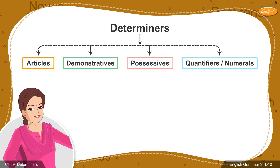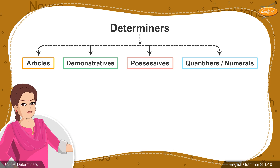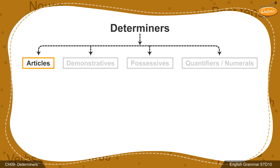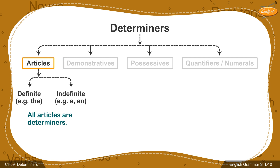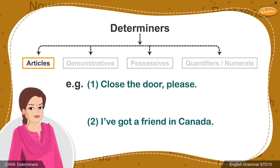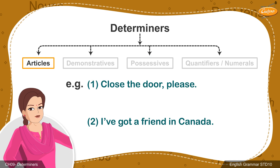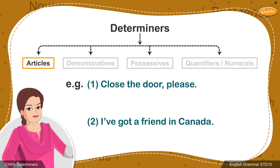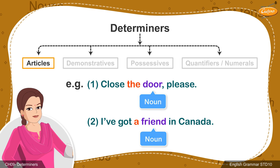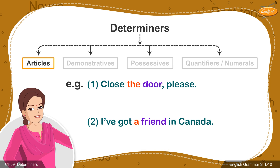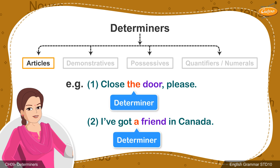Let's now learn in detail about each type of determiner. Students, all articles whether they are definite or indefinite are determiners. In the given examples, 'close the door please' and 'I have got a friend in Canada,' the articles 'the' and 'a' are followed by the nouns 'door' and 'friend' respectively. Thus, these articles are to be considered as determiners.